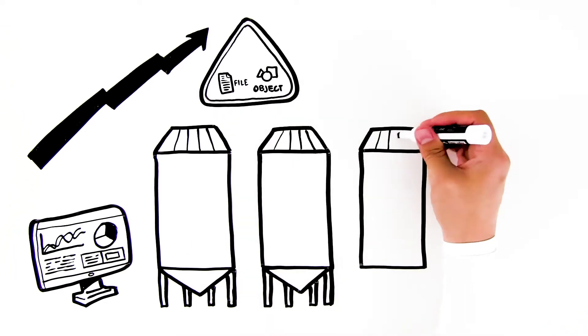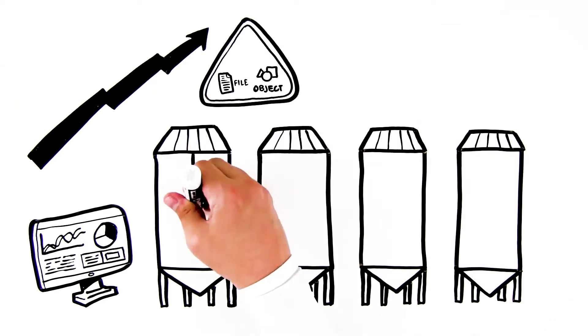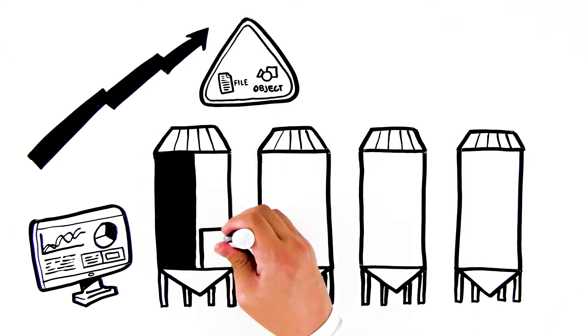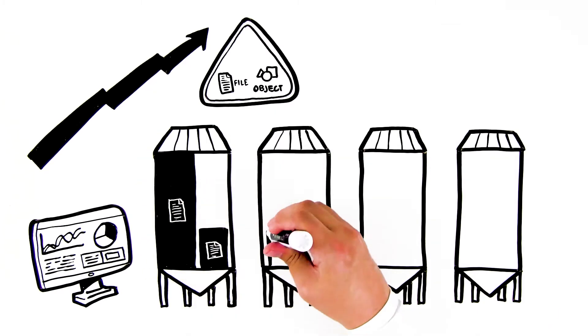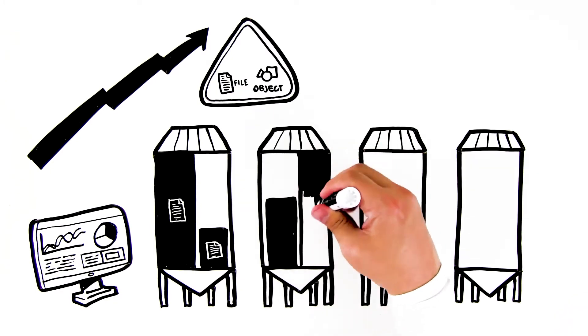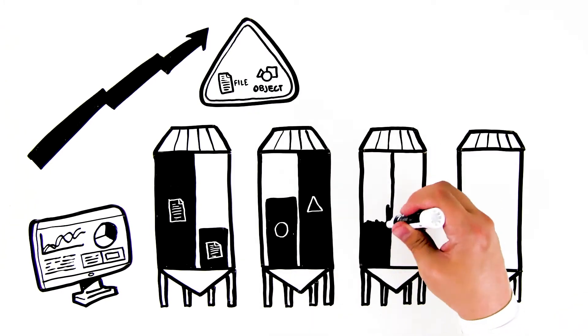Yet these silos are extremely inefficient and complex. One organization could have extra capacity on its object platform but be running out of space on its file platform, while another could be running out of object but have plenty of file space.